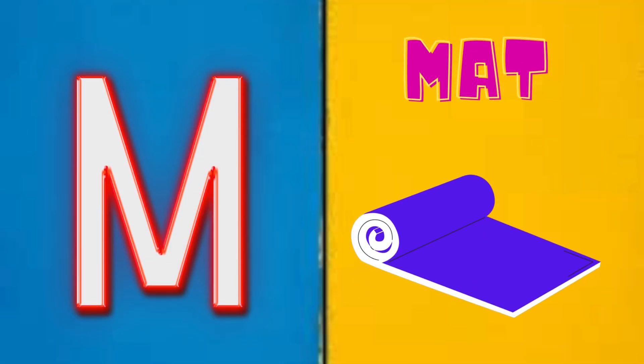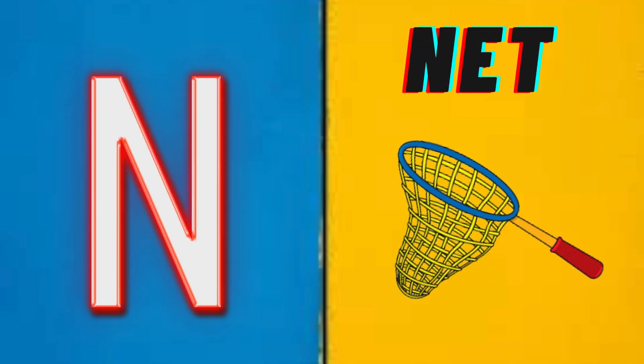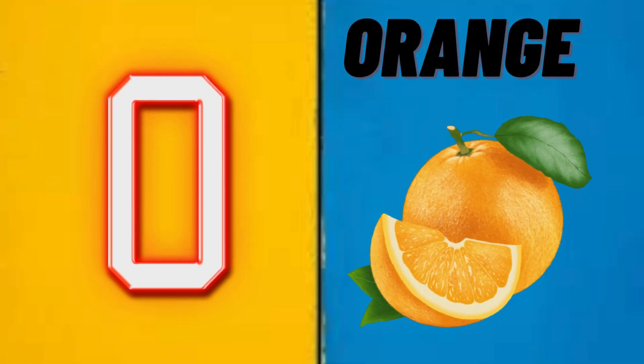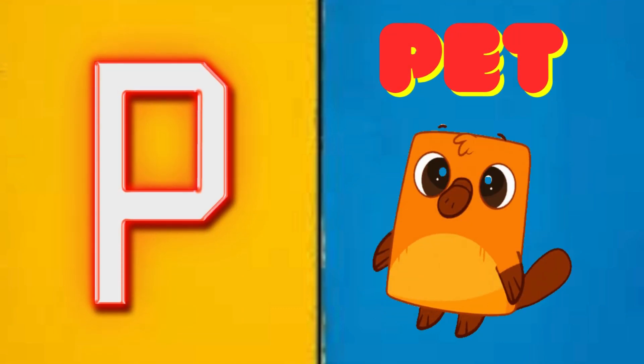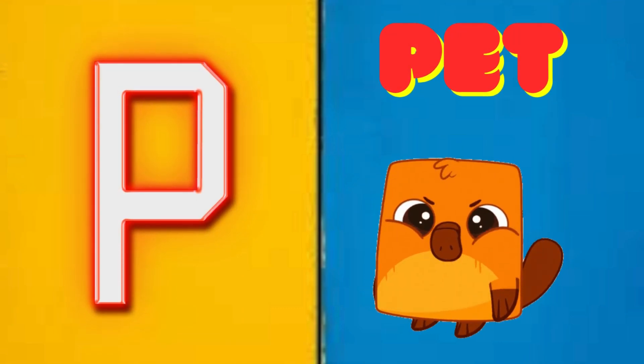M is for Mat, M-M-Mat. N is for Net, N-N-Net. O is for Orange, O-O-Orange. P is for Pet, P-P-Pet.